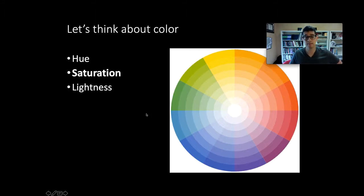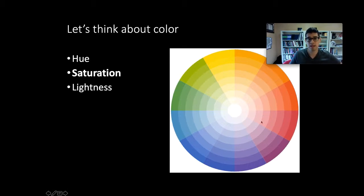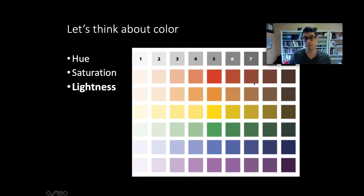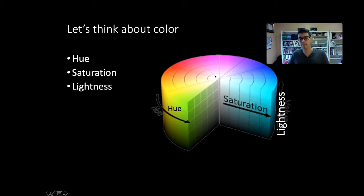Instead, we want to think about using saturation or lightness to distinguish different kinds of data. Saturation is like mixing paint: you start with plain white paint and progressively add more colored dye, increasing vibrancy. Starting with white and adding more drops of red dye gives you a more vibrant red. Lightness is kind of the opposite: you start with a color and add more black to make it a darker shade. So saturation goes from absence of color to vibrant color, while lightness goes from light to dark shade.